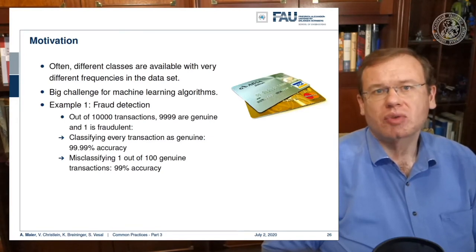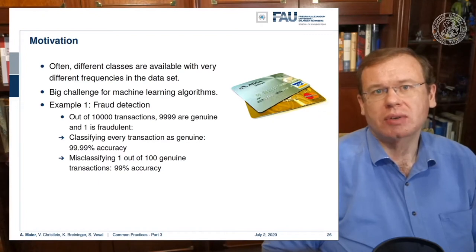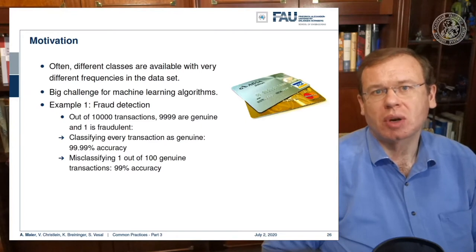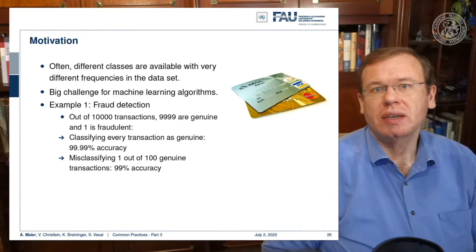Obviously we run into trouble. Also in less severe situations — let's say if you only have one out of a hundred fraudulent transactions — you would still very easily construct a model of 99% accuracy if you classify everything into non-fraudulent.